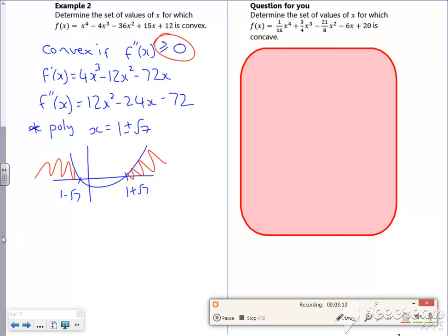So it's convex for x belonging to the reals, such that x is less than or equal to 1 minus root 7.